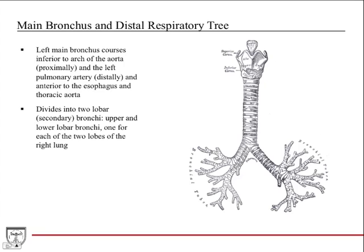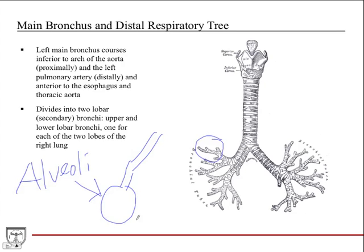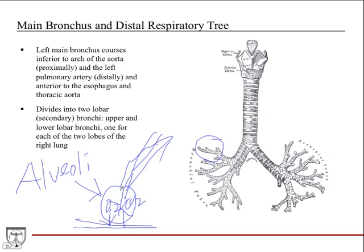After the lobar bronchi, you have the segmental bronchi, which go into the segments within each lobe of the lung. Eventually these airways terminate into the alveoli — air-filled sacs where gas exchange occurs. The air reaches this point, the sacs expand and collapse, and the pulmonary capillaries carry deoxygenated blood from the right side of the heart to take part in gas exchange. O2 is picked up and CO2 is deposited for release. That's the terminal portion of the respiratory tree.